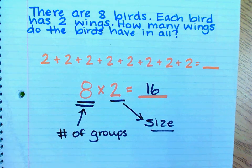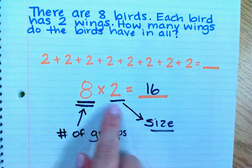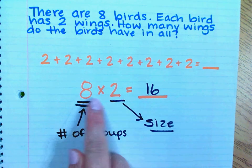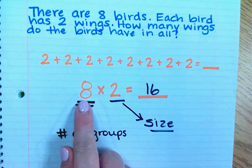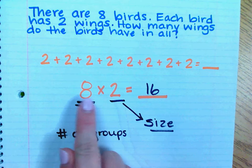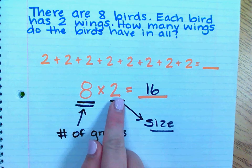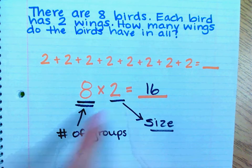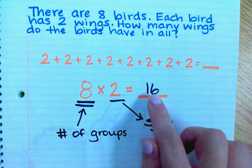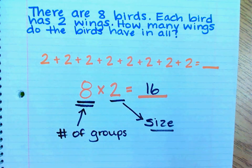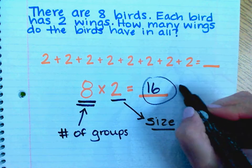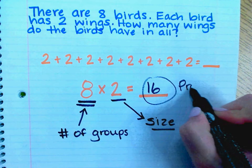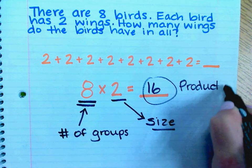So for example, in 8 times 2, we can read this problem as 8 groups of 2, or 8 groups with 2 in each group, or 8 twos. The answer in a multiplication problem is called the product, and the product just represents the total.